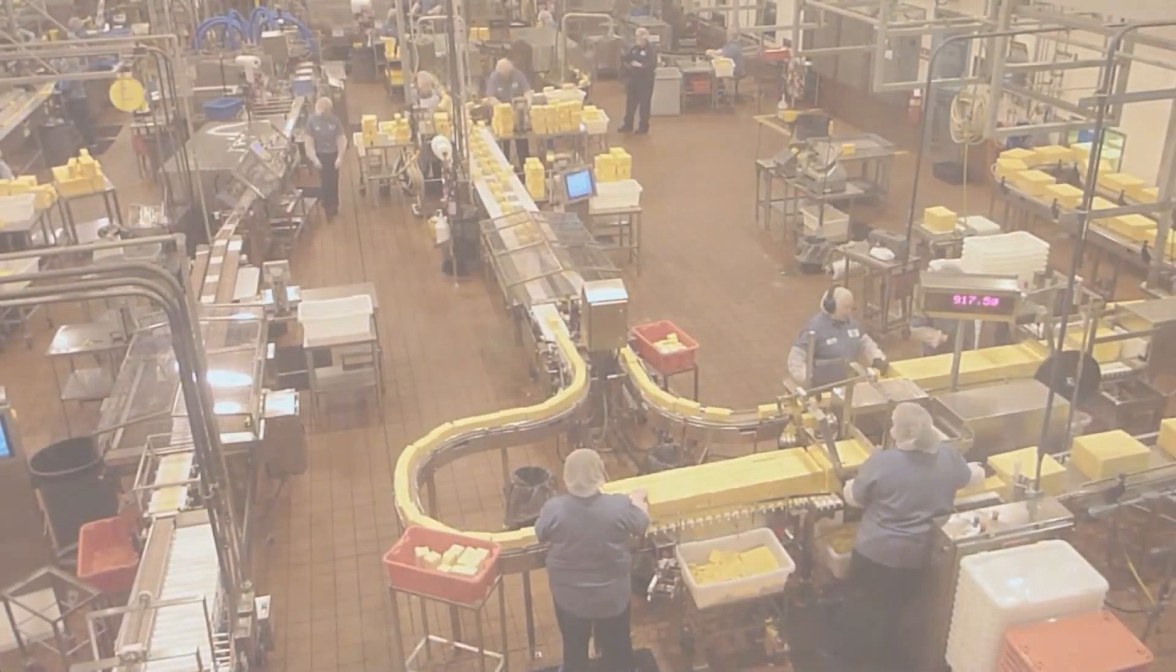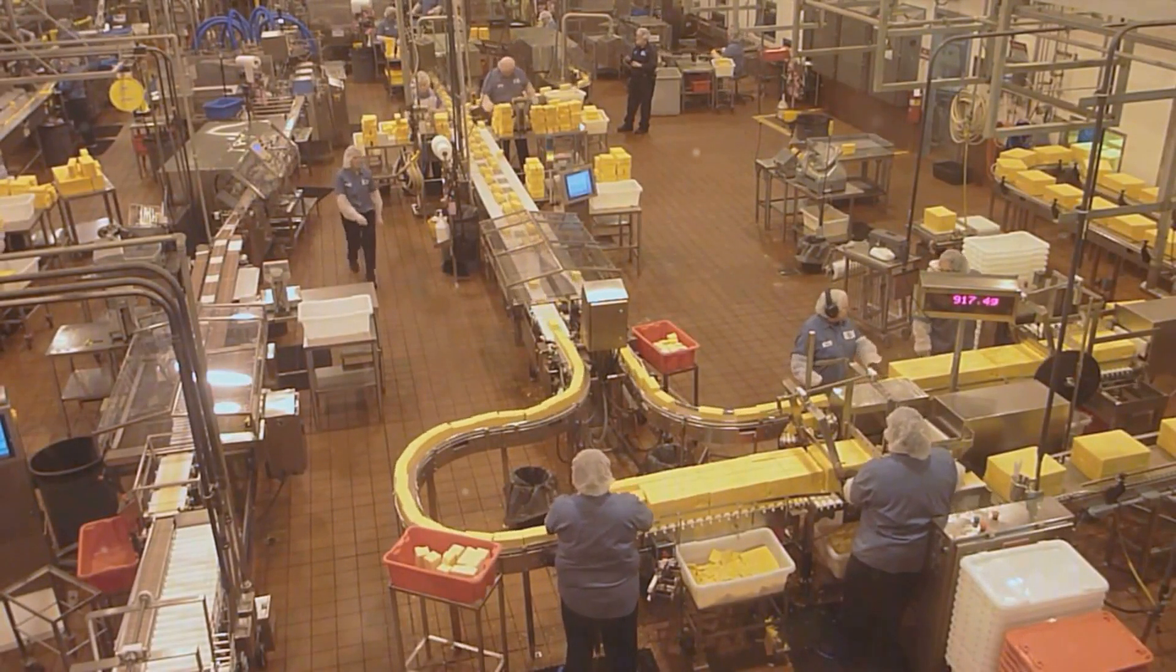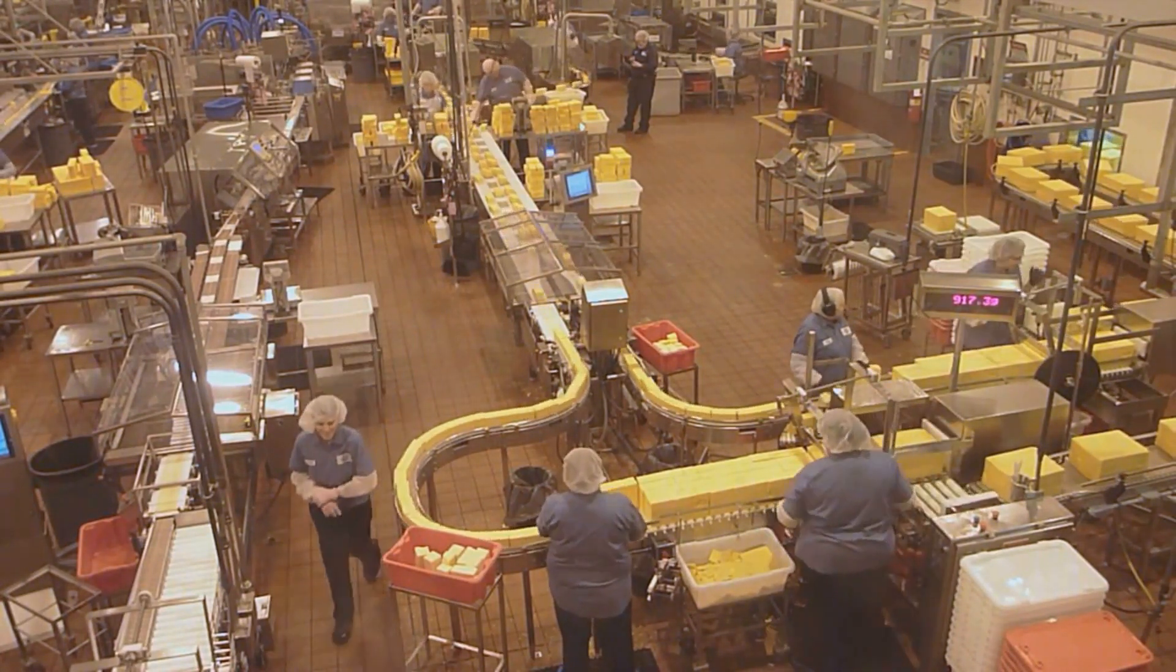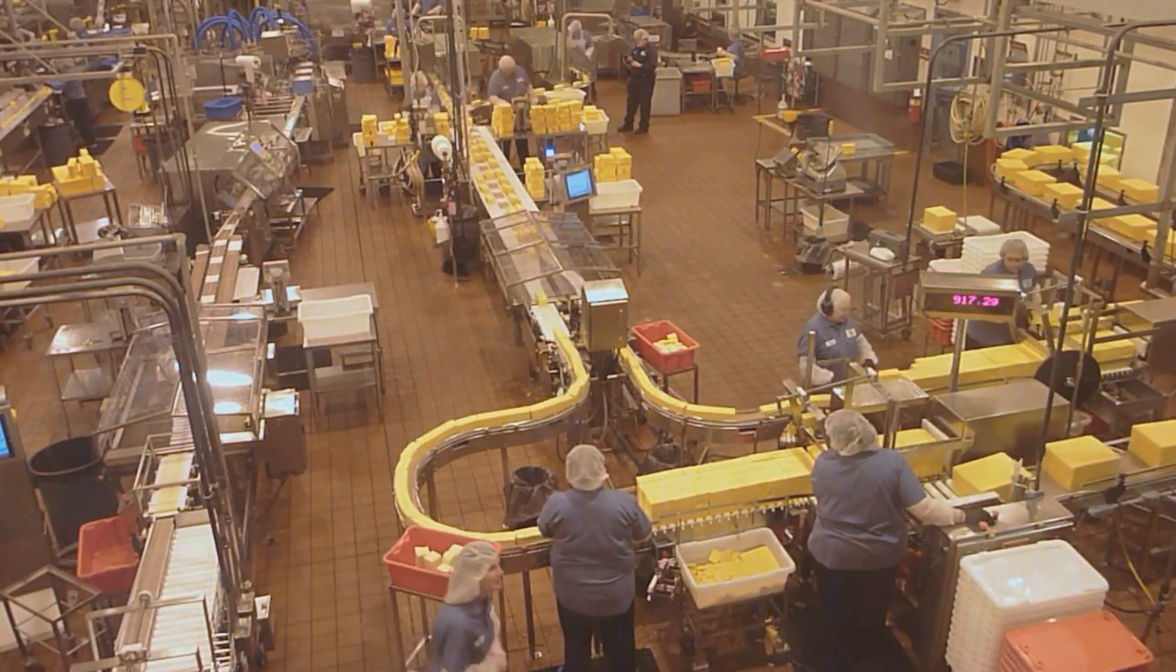After passing the quality control checks, the glow sticks are finally packaged and ready for distribution. They remain in a dormant state until the glass tube inside is broken, triggering the chemical reaction and creating the captivating glow.